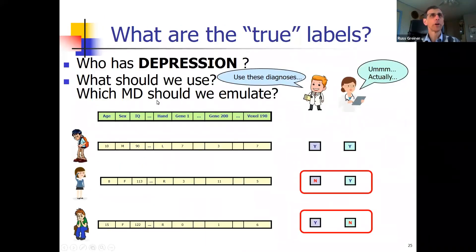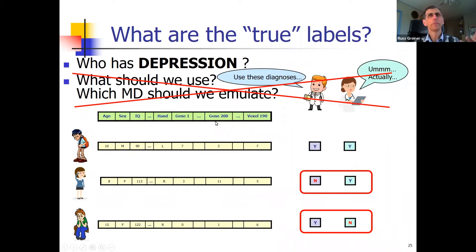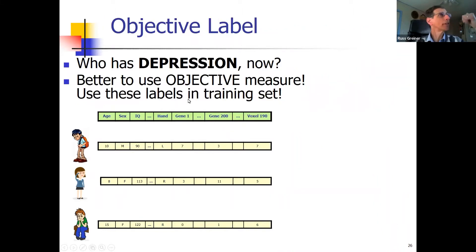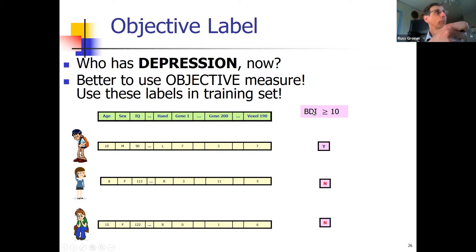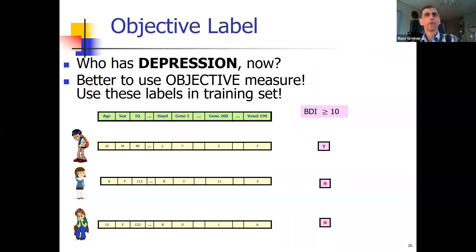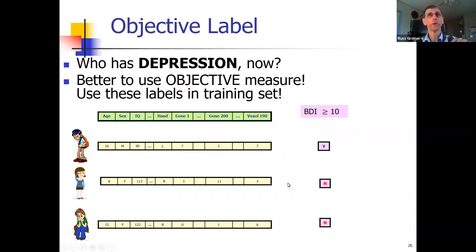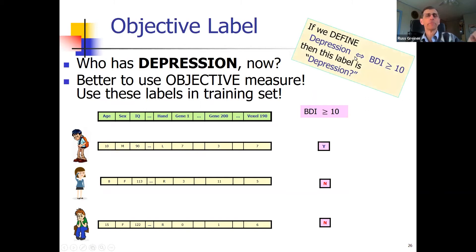Now, talking about true labels — which one should we use? Maybe we're asking the wrong question. Instead of using a doctor's subjective opinion, let's define depression using the BDI — a self-report where the patient puts in numbers, you add them up and get a score. Two clinicians looking at the patient's self-report will unambiguously agree whether the score is greater than 10 or not. So we can redefine depression as BDI greater than 10 and use that as our objective label.